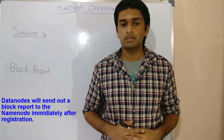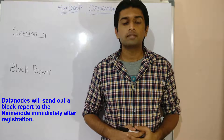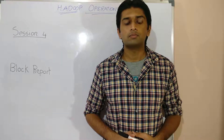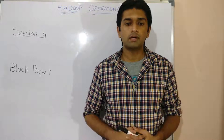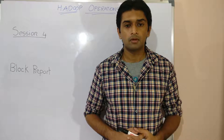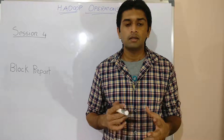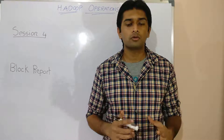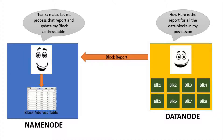Immediately after the registration process is complete, the data nodes will send out a block report to the name node. The data nodes send this report to identify all the block replicas in their possession. A block report contains the block ID, the generation stamp, and the length of each block replica hosted on that particular data node. This is how the name node populates its block address table.